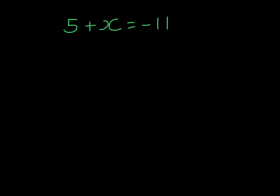In this example, we're adding 5 to x, so the inverse would be to subtract 5 from both sides. On the left-hand side, I'm left with x, and on the right-hand side, if I owe 11 and I owe 5, I owe 16.